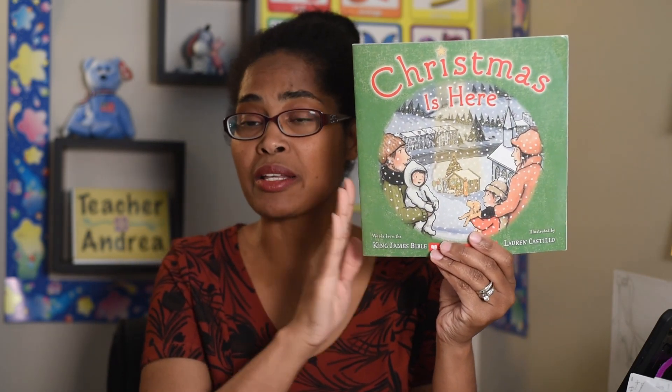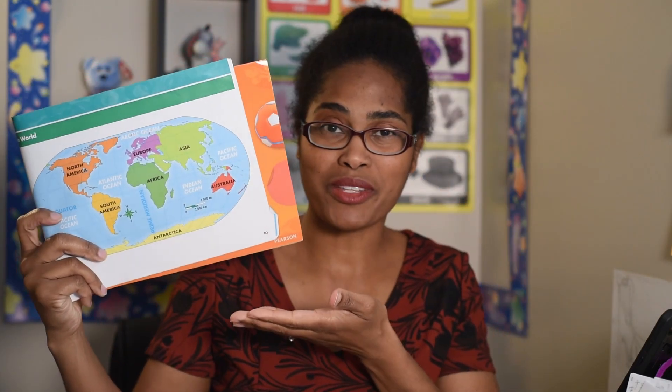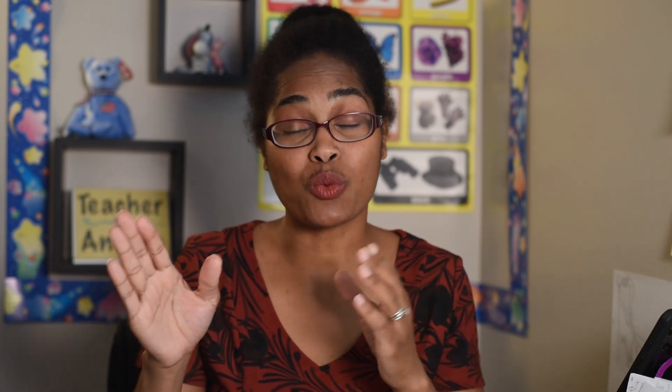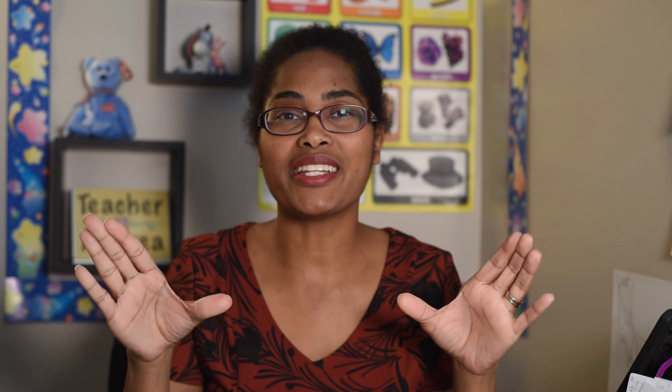A text-to-world connection is a connection between a book we are reading and something going on across the world. We want to differentiate between text-to-text and text-to-self connections — where we connect to our own personal space — and text-to-world connections, where we broaden that scope and make a connection strictly between the book and something going on in the world.